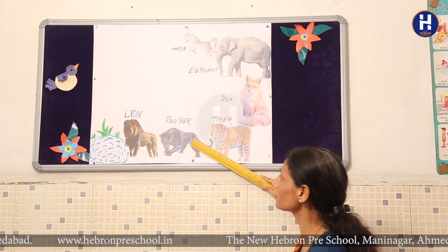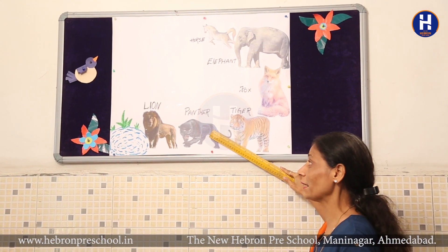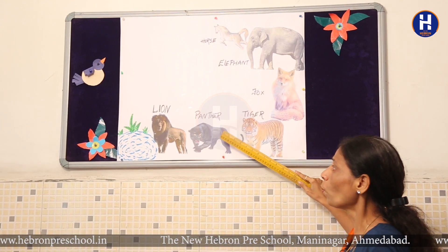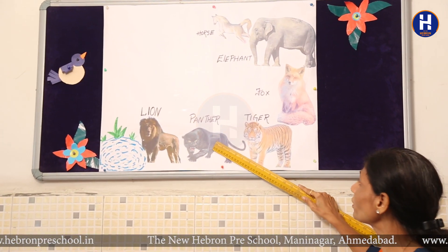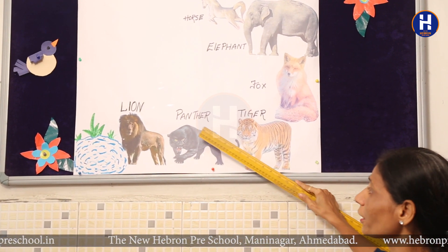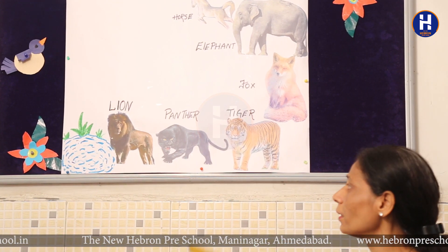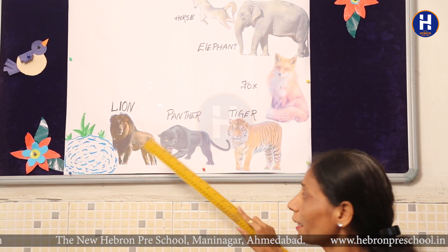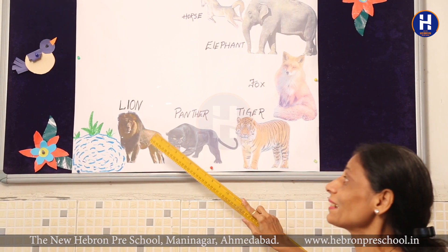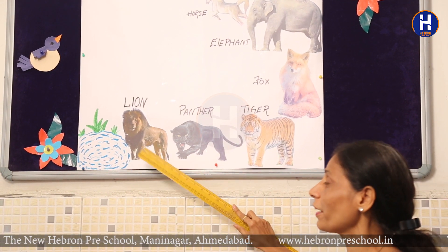Which animal is this? Yes, panther. Now which animal is standing before panther? Panther ke before konsa animal khada hai? Usse pehle konsa hai? Yes, lion! Good children, very good.